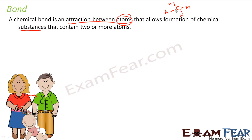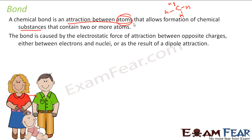This compound has five atoms, formed because of attraction between carbon and hydrogen. There are four bonds between carbon and hydrogen. And what is the cause of the bond? This bond is caused by electrostatic force of attraction between opposite charges.